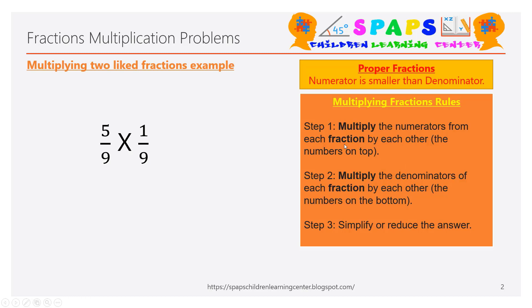Let's start with the multiplication of two like fractions. The numerator is smaller than the denominator, so it is a proper fraction. One by nine is also a proper fraction. Like fractions means both denominators are the same — nine and nine are both the same — that's why these are called like fractions.